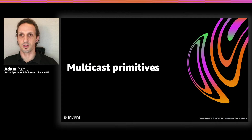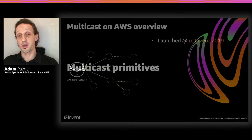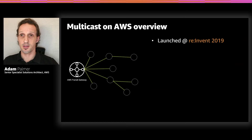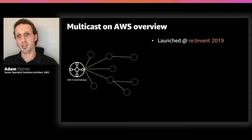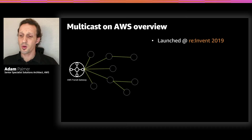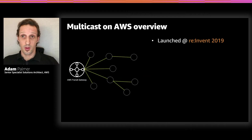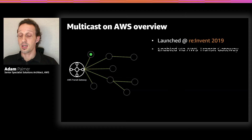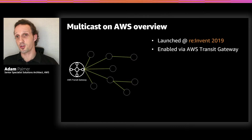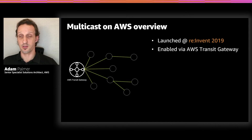So how does multicast come together on AWS? Multicast was launched in 2019 and was picked up by Andy Jassy during his keynote presentation. Customers had been asking for a native way to build multicast workloads on AWS without the added complexity of building overlay networks. AWS was the first public cloud provider to offer such a service. The service is enabled via Transit Gateway, so you must deploy Transit Gateway first and enable it for multicast services.